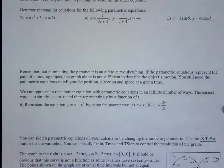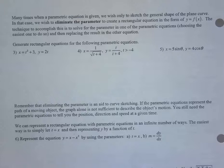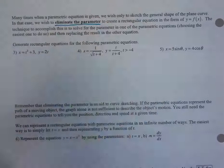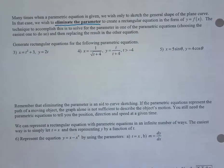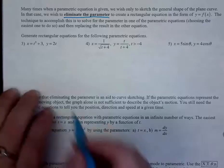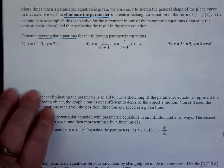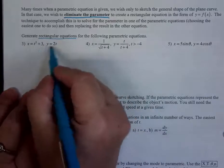Now we're going to do some algebra. Many times if we want to know just what the graph looks like, instead of drawing out the chart and plotting points, we can do what's called eliminate the parameter — get rid of the t or theta. T and theta are the most common parameters we use. Take one equation, solve it for t, plug it in the other one, get rid of the t's. Rectangular equations is what equations are called when they're just x and y — and that's what we've been doing all along, because they go on a rectangular grid.